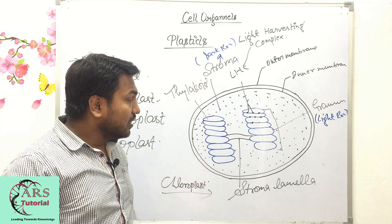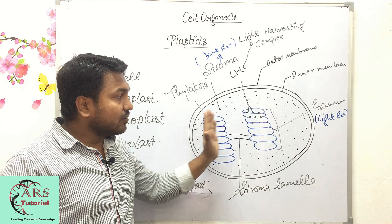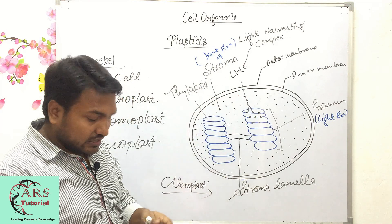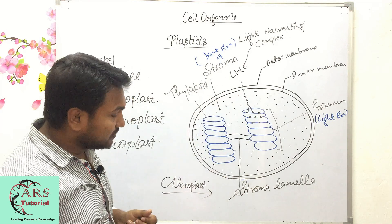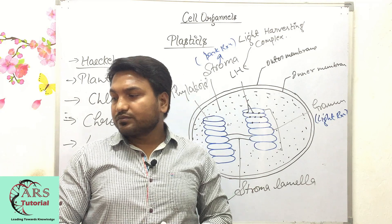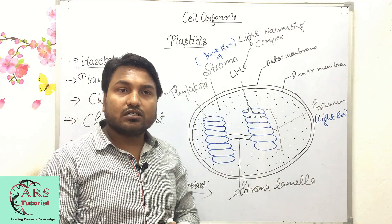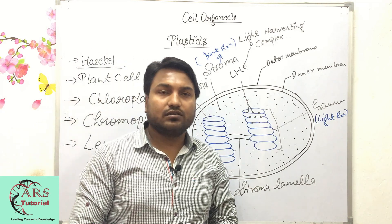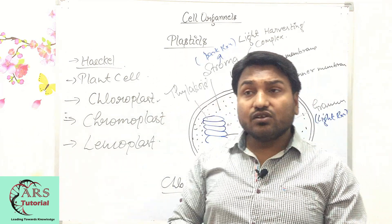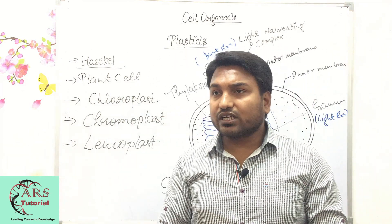The stroma connects one granum to another, and many grana are present in the stroma. That is all about plastids. In this video we have discussed two cell organelles: mitochondria and plastids.